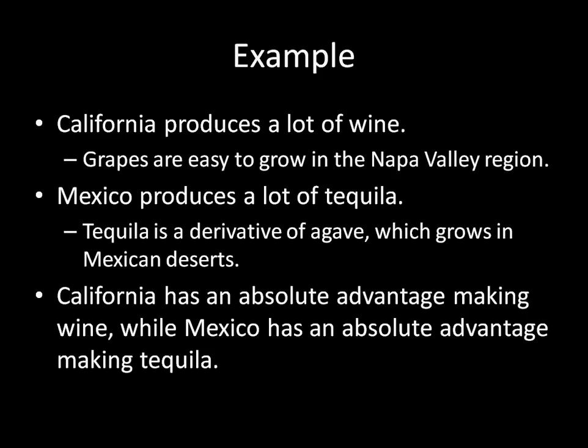Unsurprisingly, it's going to be the case that states should specialize in what they're good at. California should specialize in making wine, Mexico should specialize in making tequila, and then they should trade those products. California should ship some wine off to Mexico, and Mexico should ship some tequila off to the United States.